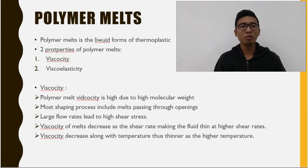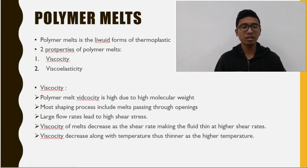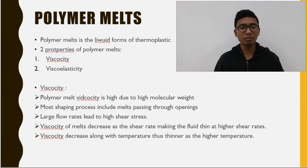The first topic to discuss is polymer melts. To shape thermoplastic polymers, they must be heated so that they open to the consistency of a fluid. In this form it is called a polymer melt. The properties of the melt are viscosity and viscoelasticity. Due to its high molecular weight, polymer melt is a thick fluid with high viscosity. Most polymer shaping processes involve flow through small channels or die openings, and flow rates are often large, leading to high shear rates and shear stresses, so significant pressure is required.